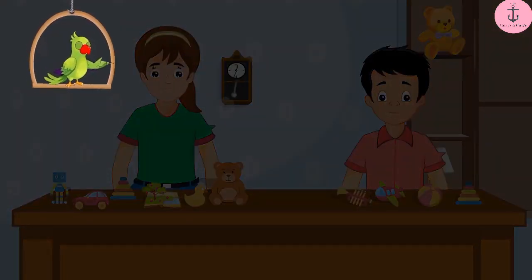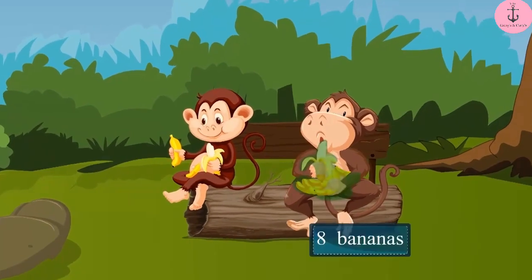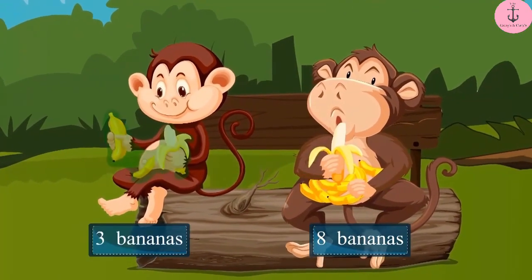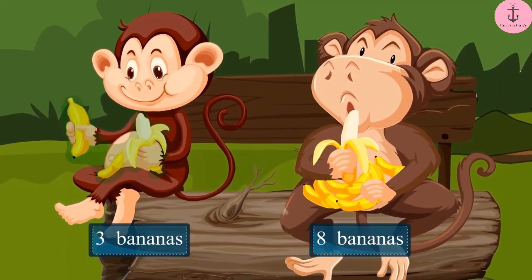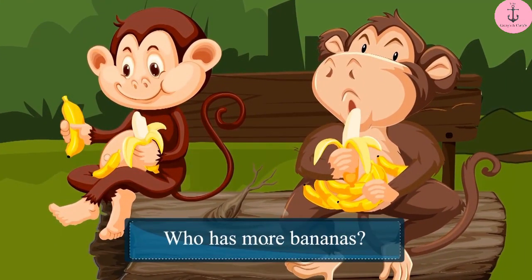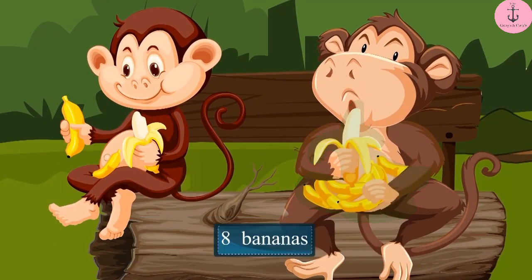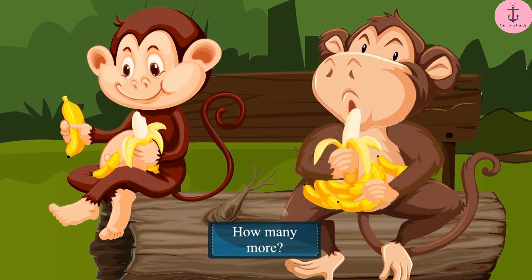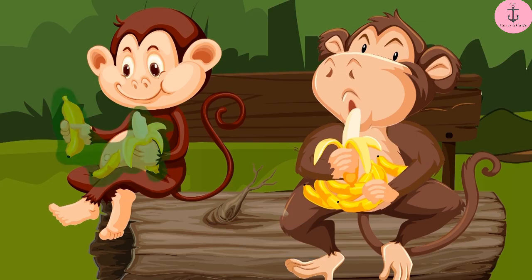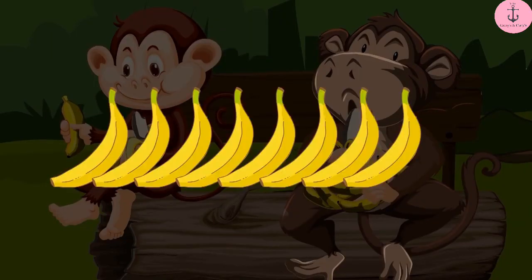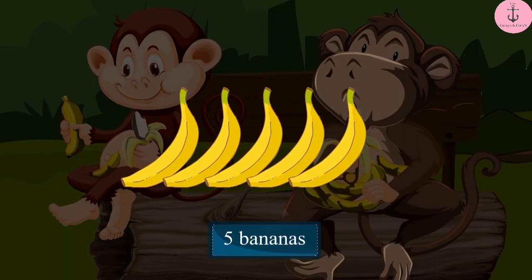Let us see another similar example. The fat monkey has eight bananas and the thin monkey has three bananas. So, who has more bananas? Yes, the fat monkey has more bananas. And how many more? To find this out, we subtract the number of bananas the thin monkey has from the number the fat monkey has. On subtracting three from eight, we are left with five. So, the fat monkey has five more bananas than the thin monkey.